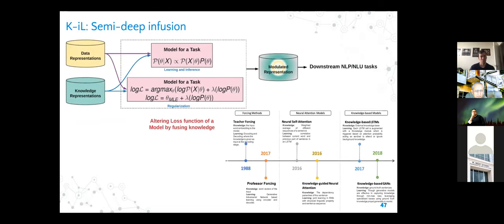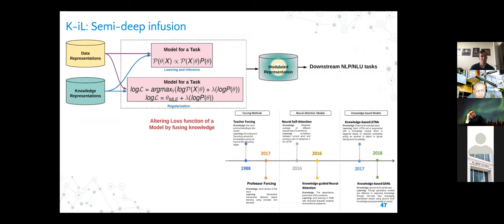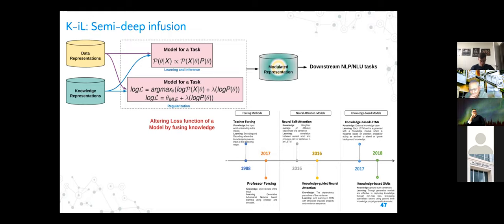For semi-deep infusion, the model has an input distribution p(X|θ), where θ comes from your knowledge representation and X from your data representation. You want both X and θ to affect each other in terms of model learning. Learning inference and regularization are two methods in which semi-deep infusion can occur, and there are whole series of work along this line.